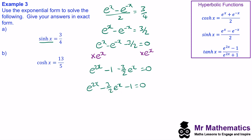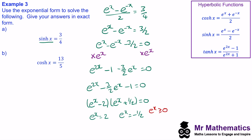You might notice this looks like a quadratic — we have a power of two, a power of one, and a constant — and we can factorise it. We get (e^x − 2)(e^x + 1/2) = 0, because −2 + 1/2 = −3/2 and −2 × 1/2 = −1. Solving: e^x = 2 or e^x = −1/2. But e^x must always be greater than or equal to zero, so e^x = −1/2 is not a valid solution.